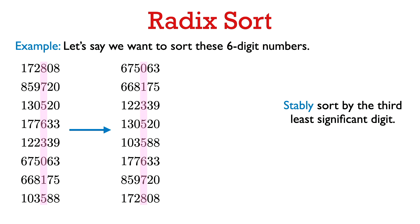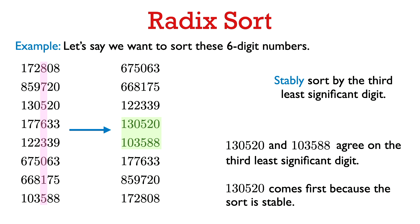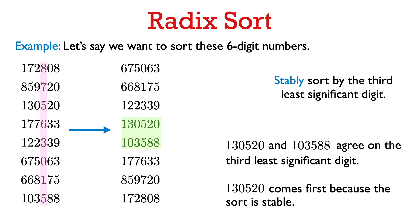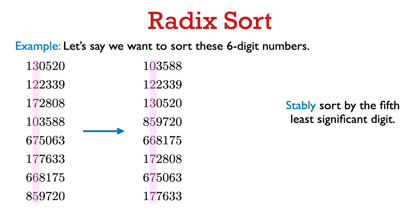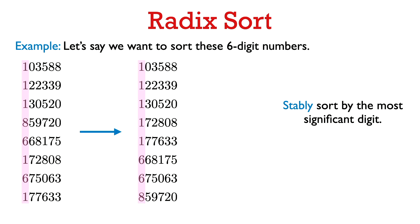We just keep proceeding in this fashion. Now we use a stable sort to sort the numbers by the third least significant digit. Again, if we were to look at two numbers that agree in the third least significant digit, they're going to be ordered by their values in the two least significant digits. This is the key property why the numbers are going to be sorted at the end of the algorithm, and also why it's crucial that we use a stable sort throughout. We keep going — sorting by the fourth, then the fifth least significant digit, and finally we stably sort by the most significant digit.